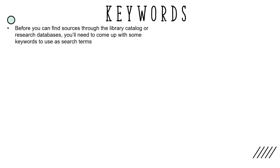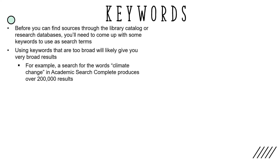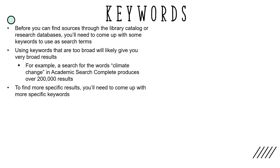Before you can get started finding sources through the library catalog or through the research databases, you'll need to come up with some keywords on your topic to use as search terms. Using keywords that are too broad in the search bars of catalogs or databases will likely give you very broad results. For example, a search for the words 'climate change' in Academic Search Complete produces over 200,000 results. To find more specific results, you'll need to come up with more specific keywords.